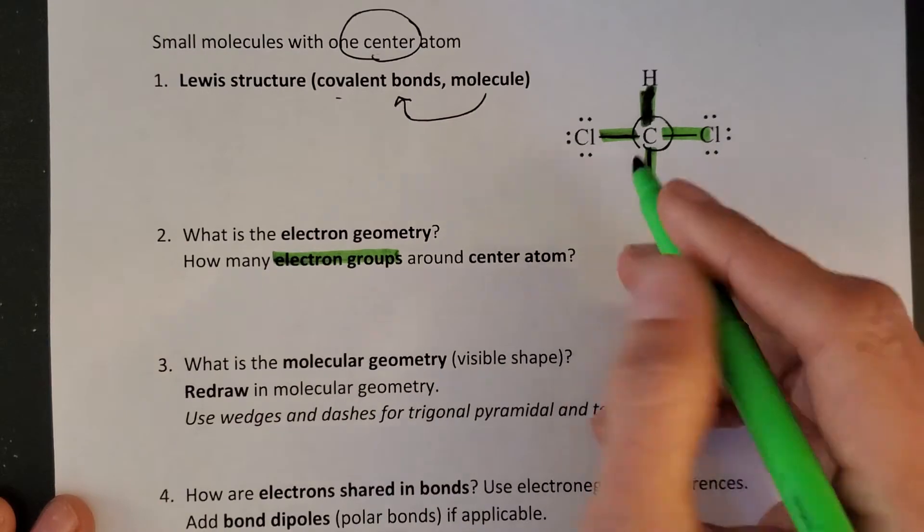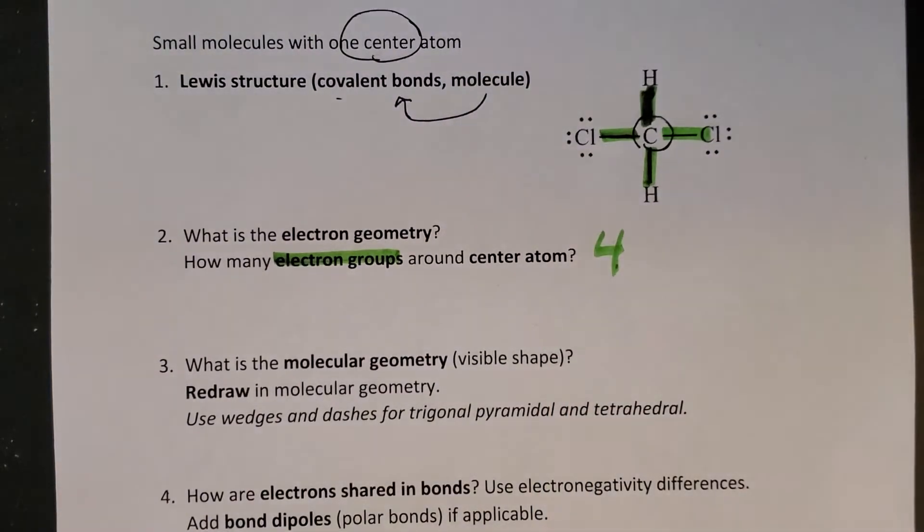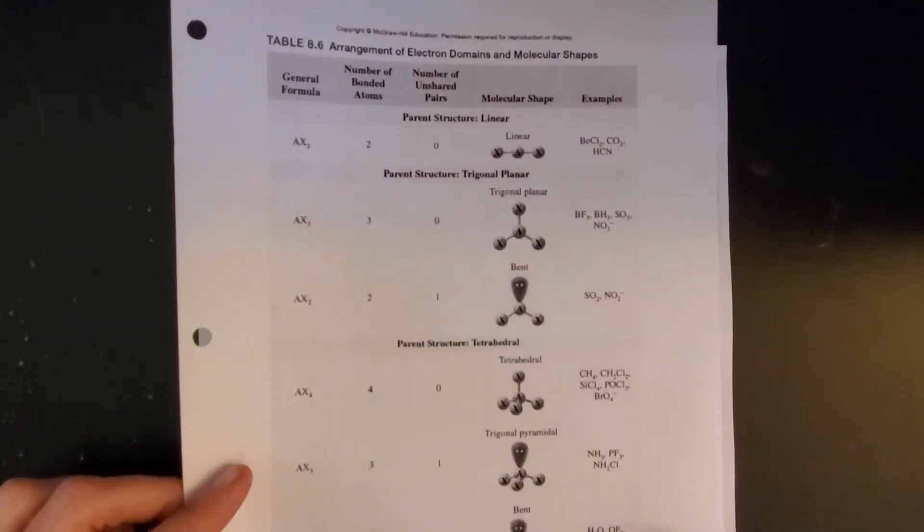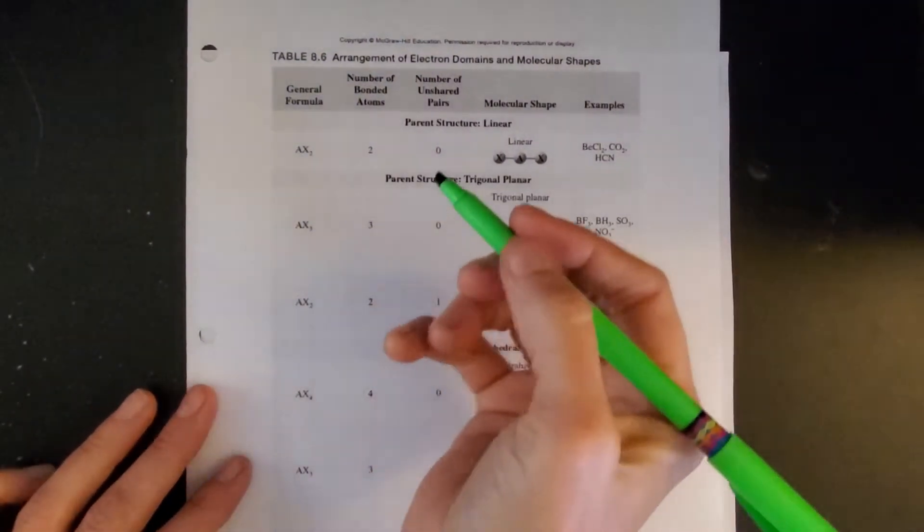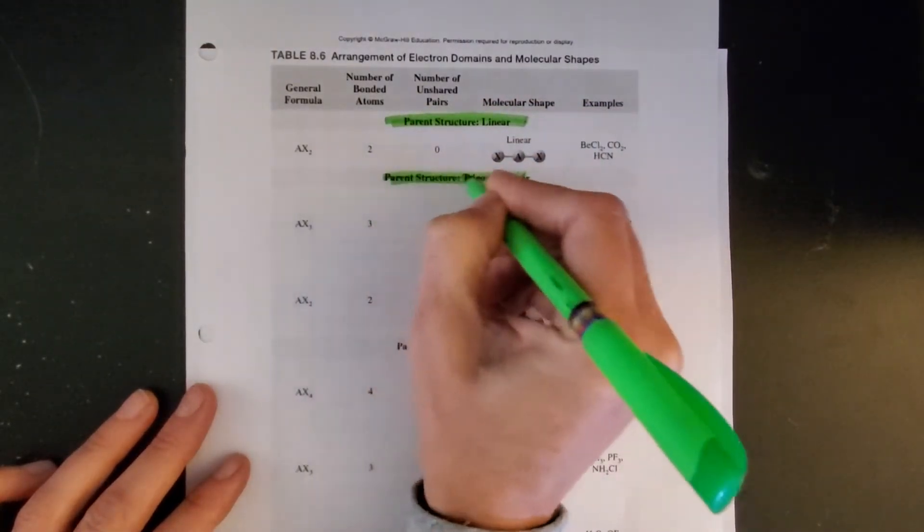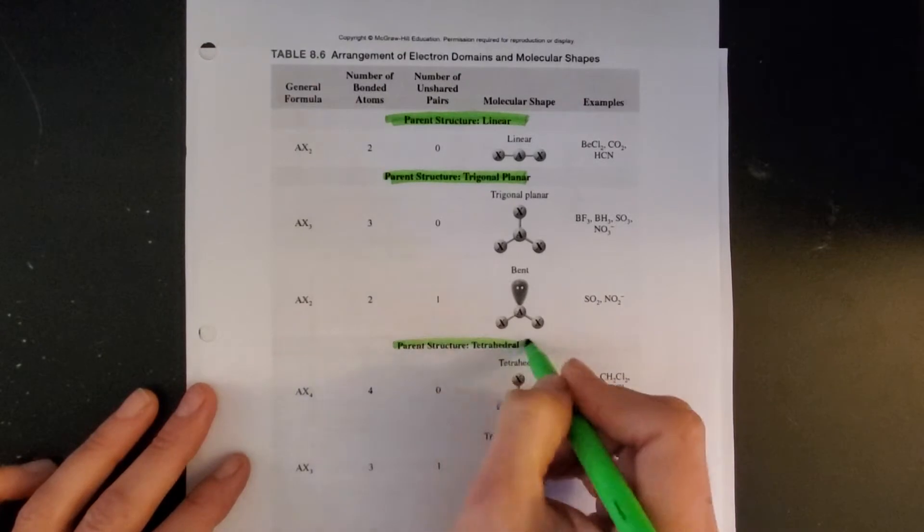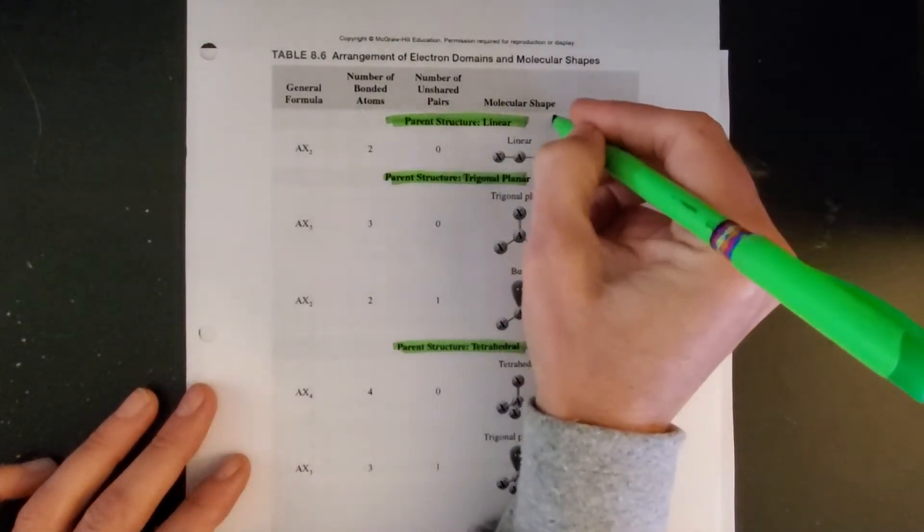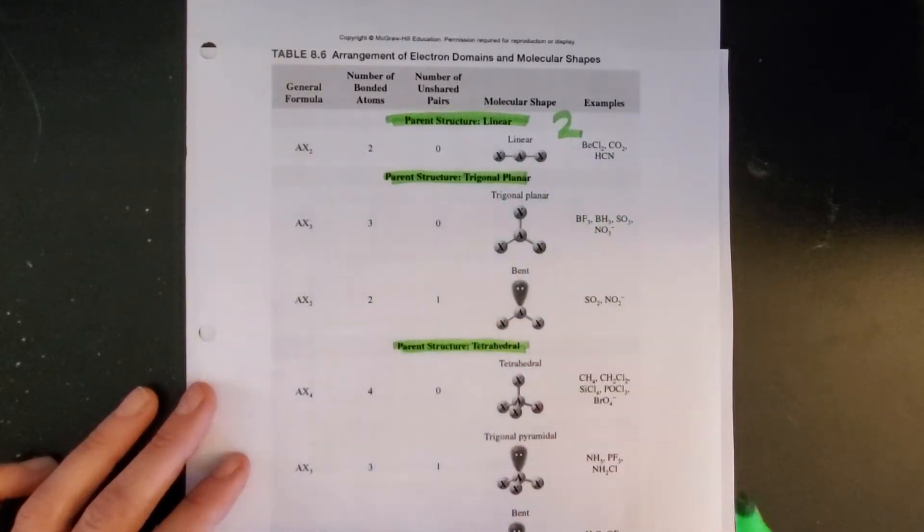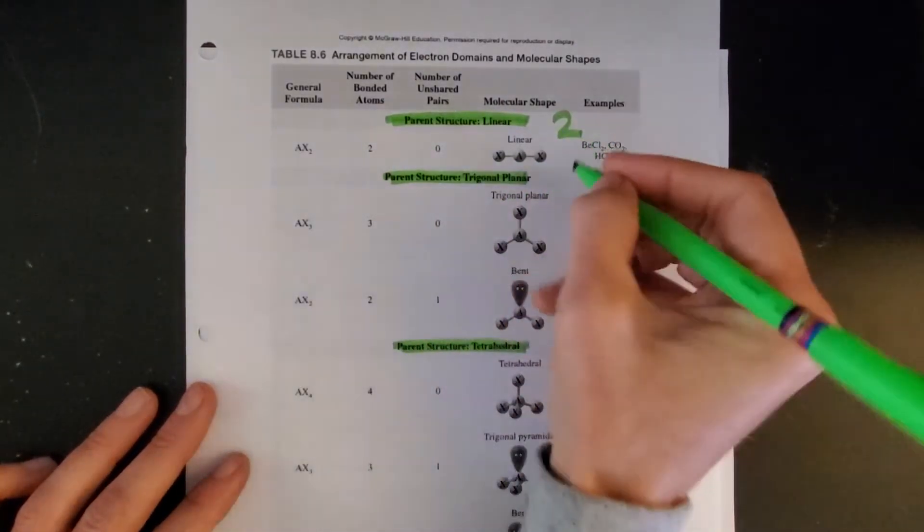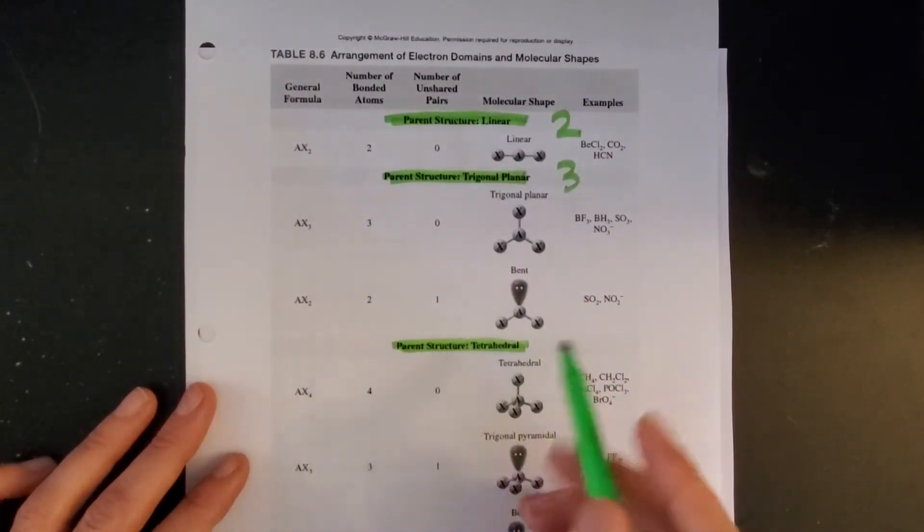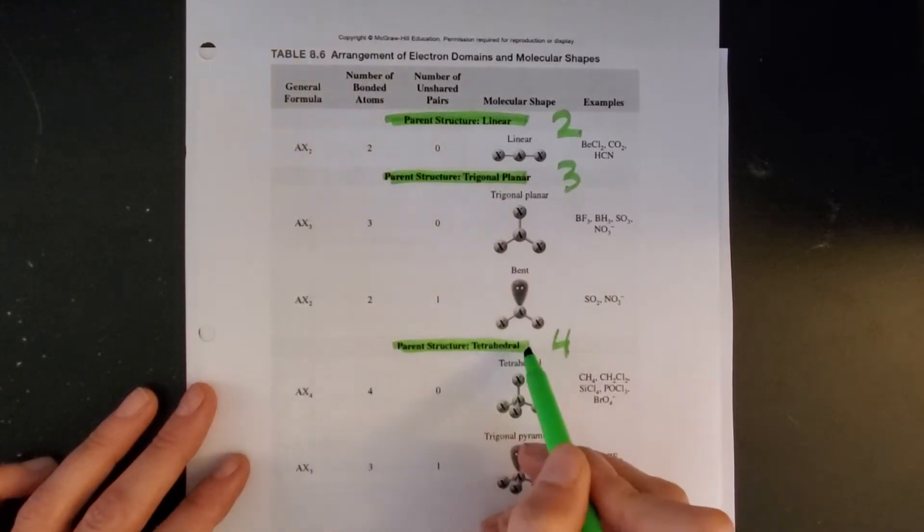Here I can see that there are four electron groups. So it might be helpful to refer to a table that looks something like this and recognize there are three different types of electron group setups for this class. If we have two electron groups then we're looking at a linear arrangement for electron geometries. If we have three we're looking at trigonal planar.